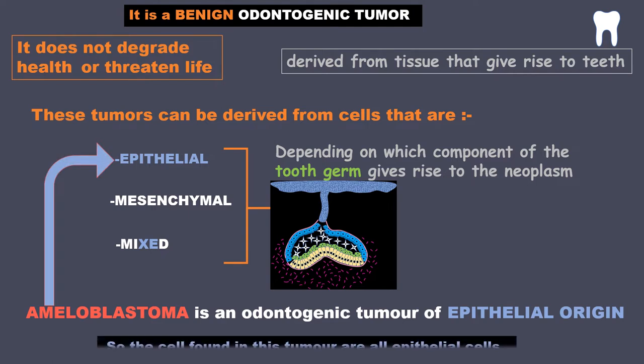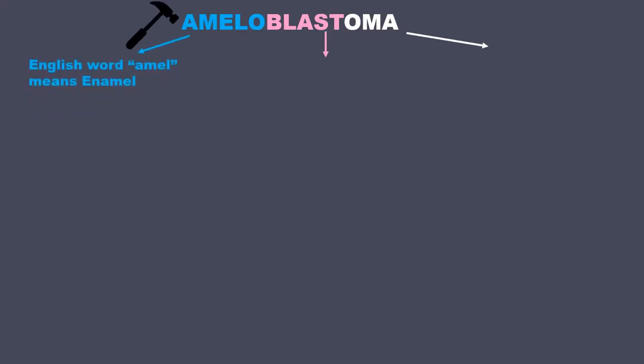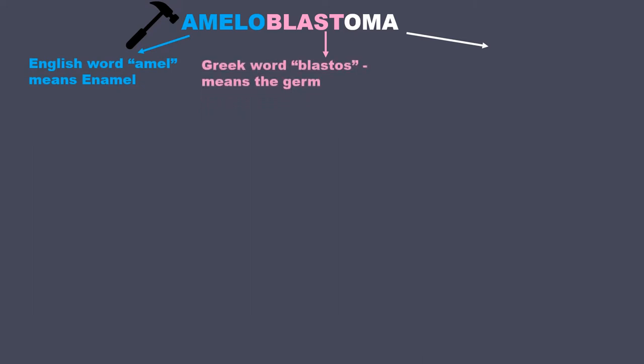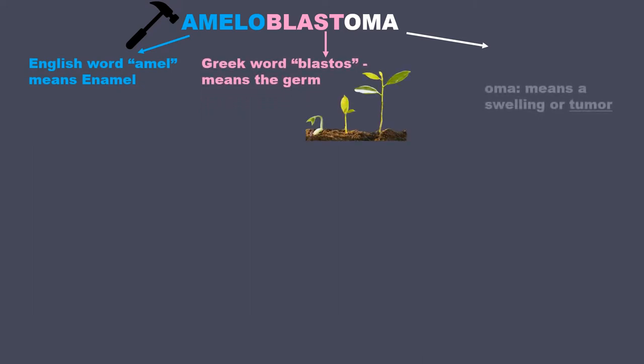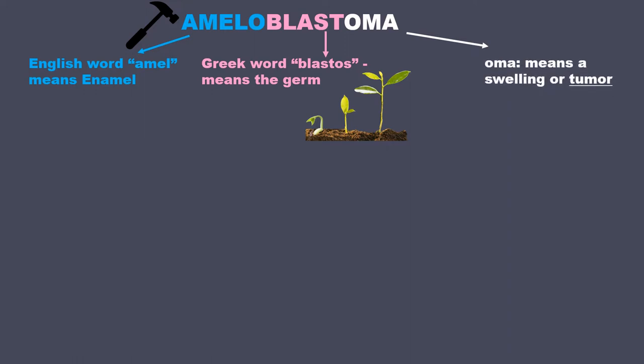The cells found in this tumor are all epithelial cells. Breaking down the word ameloblastoma: 'amel' means enamel, 'blastos' means germ as in germinate or develop, and 'oma' means a swelling or tumor which is formed by proliferating cells.